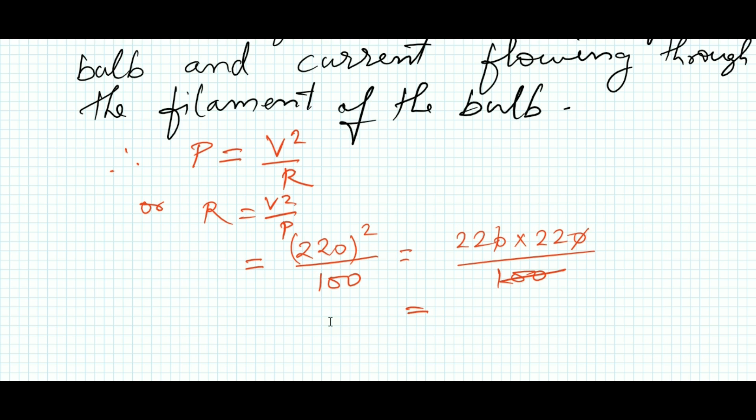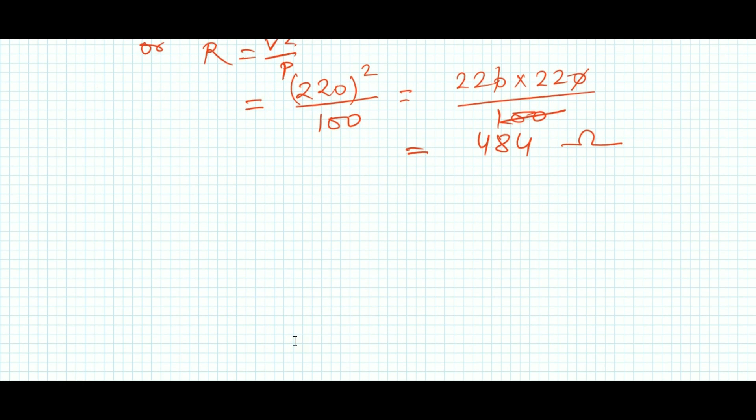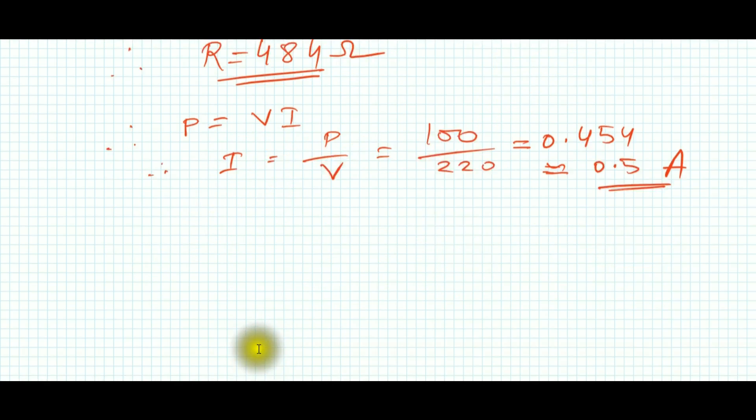Now for calculating the current, we will apply the next power equation, that is P = VI, then I = P/V, which is equal to approximately 0.454 ampere, or we can say approximately 0.5 ampere.